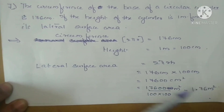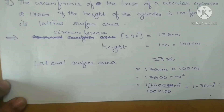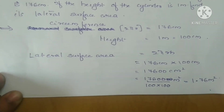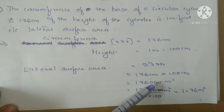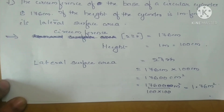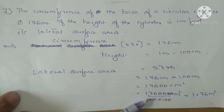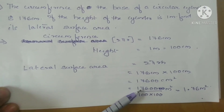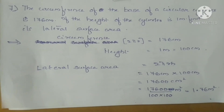So, lateral surface area equals 176 centimeters into 100 centimeters — that means we get 17,600 centimeter square. If your answer options are in meter square, then to convert to meter square, we divide by 100 into 100, that is by 10,000. So 17,600 divided by 10,000 gives 1.7600, meaning the answer is 1.76 meter square.